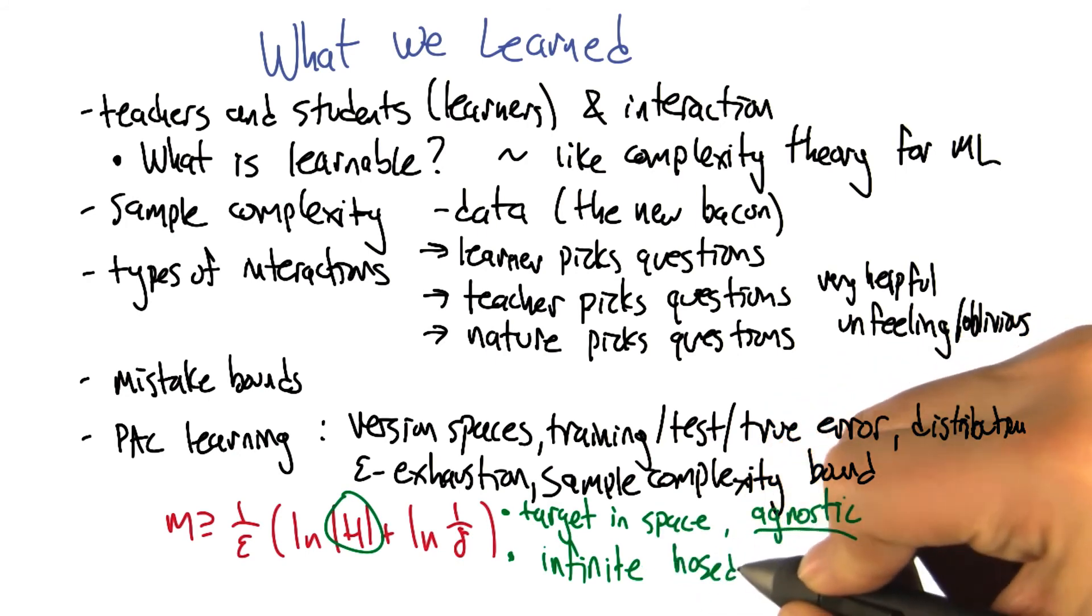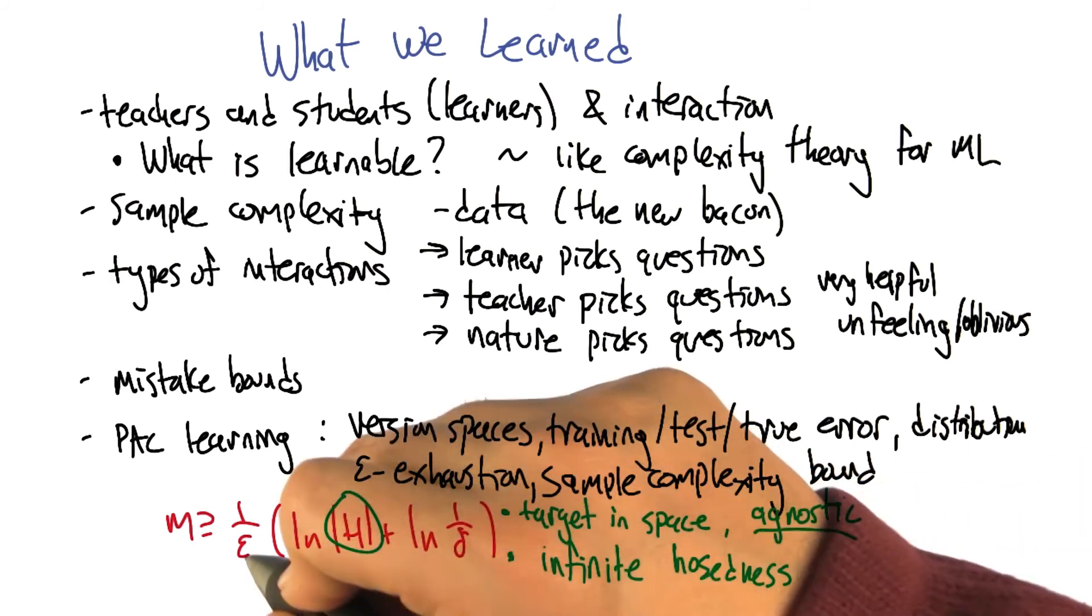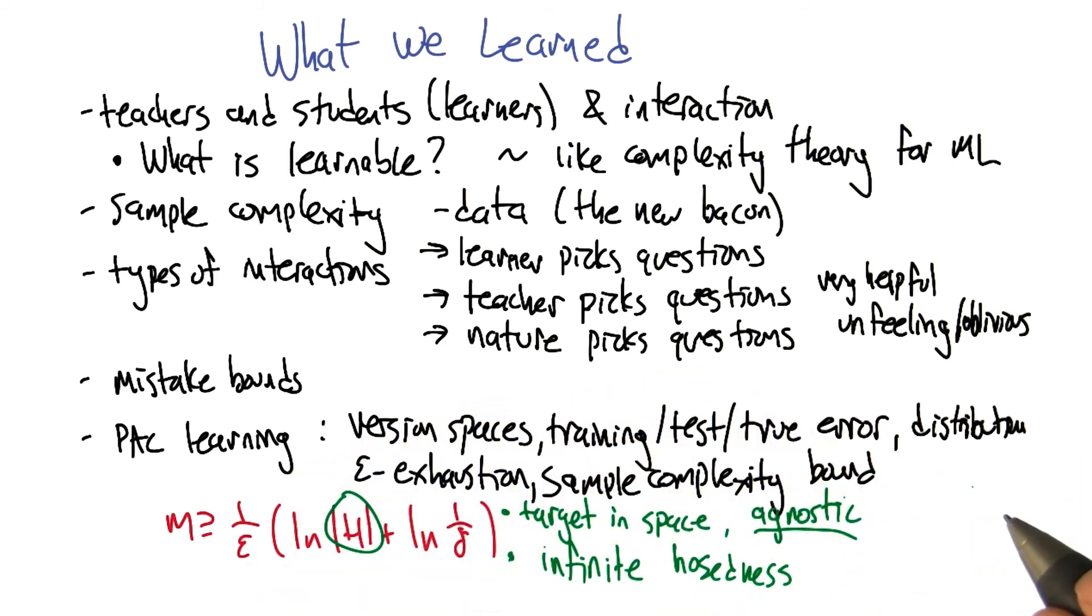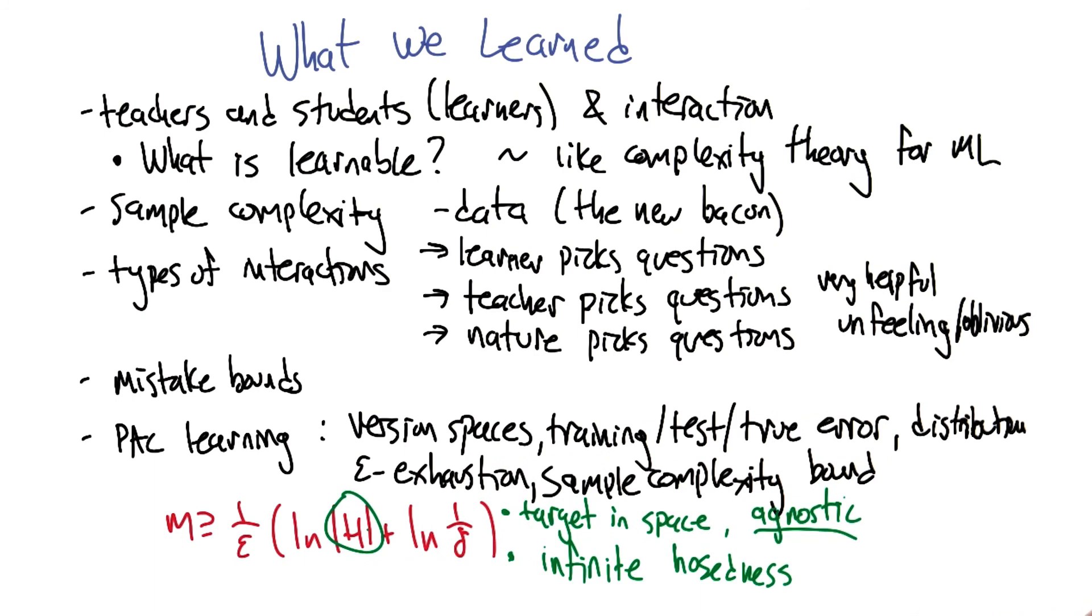So m would be greater than 1 over epsilon times the natural log of infinity, which I'm pretty sure is infinity. Yeah. Even once you multiply it by 1 over epsilon. So yeah, this is a really important issue and I think it really deserves its own lesson. So let's put this off to lesson 8.